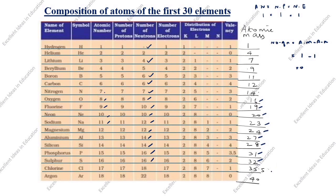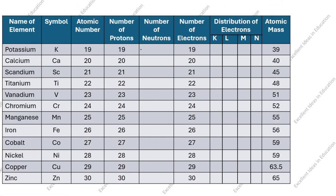Chlorine: atomic mass is 35.5, atomic number is 17. 35.5 minus 17 is 18.5, but we will round it off as 18. Argon: atomic mass 40 minus 18 is 22. Potassium: atomic mass 39, atomic number 19, so number of neutrons is 20.